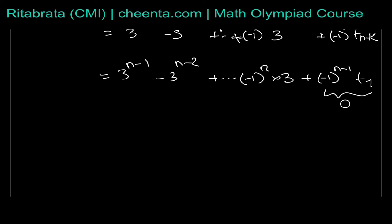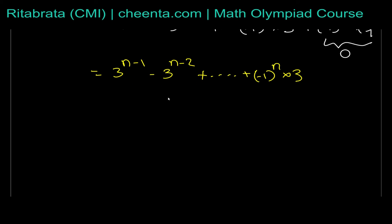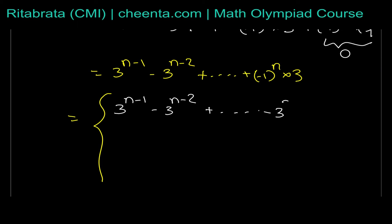So t_n equals 3^{n-1} minus 3^{n-2} plus ... which is a geometric series with common ratio minus 3 and n minus 1 terms. For n even, the series ends with a positive term plus 3, and applying the GP formula gives t_n equals 3 · ((-3)^{n-1} - 1) / (-3 - 1), which simplifies to 3/4 · ((-3)^{n-1} - 1) for n even.